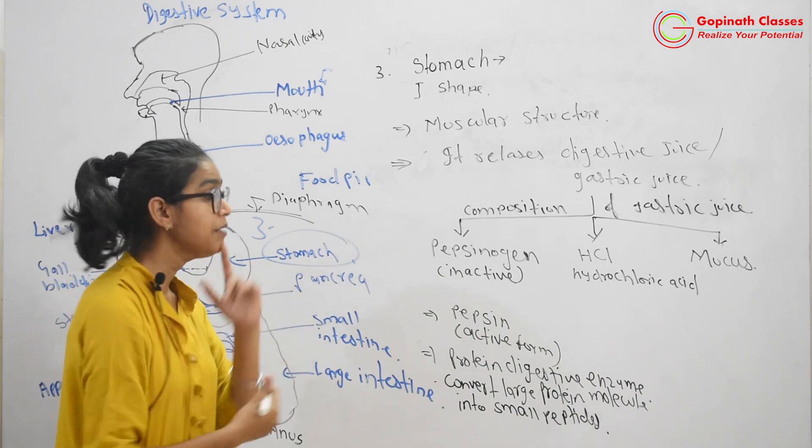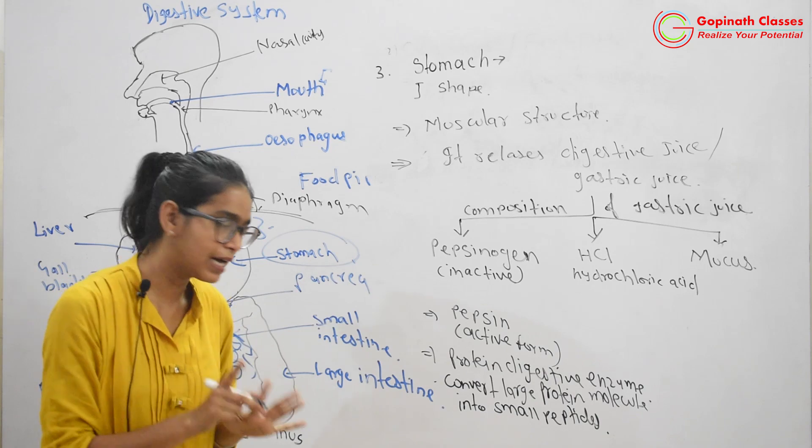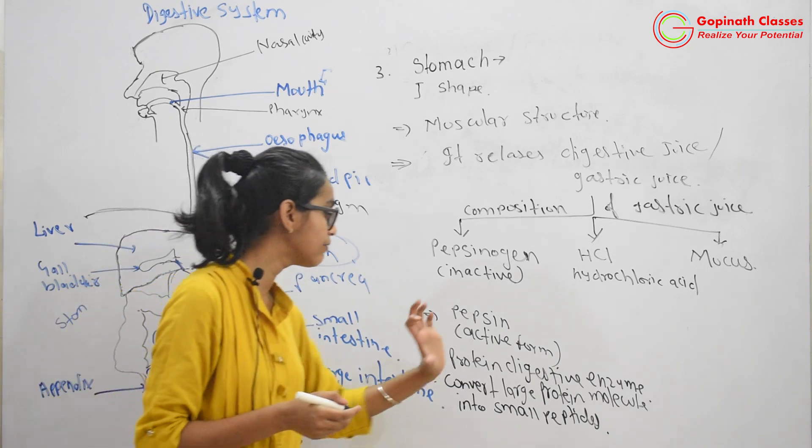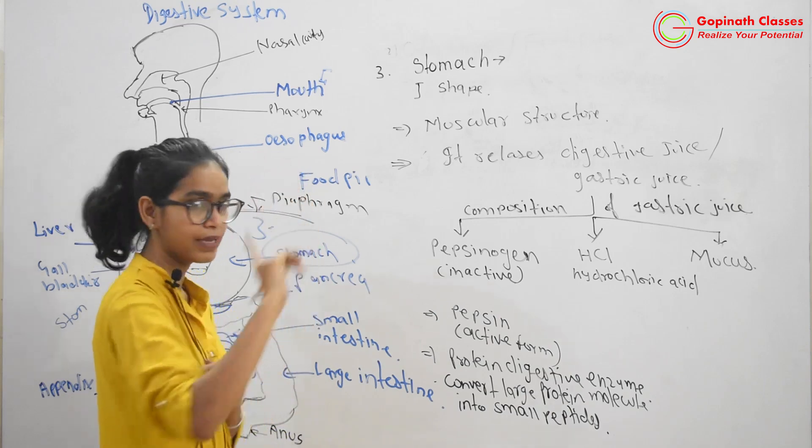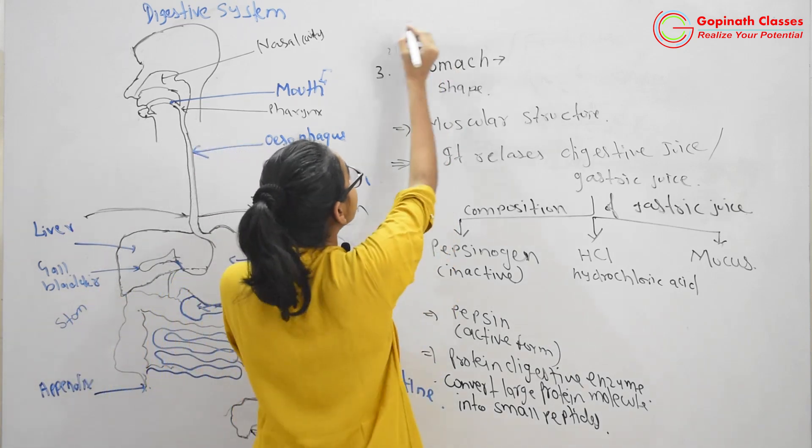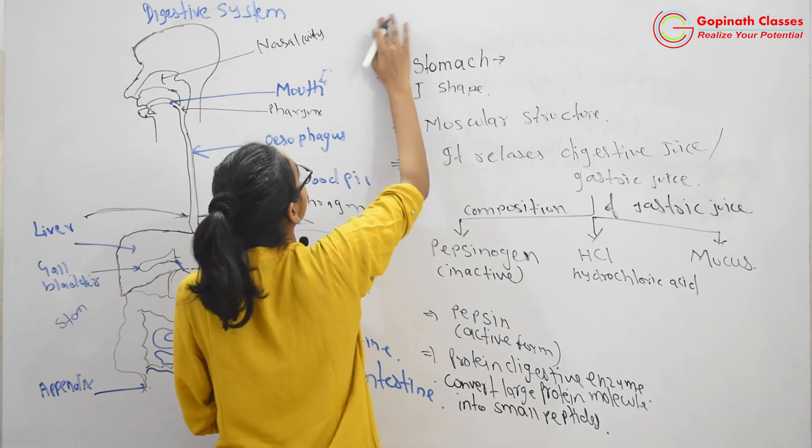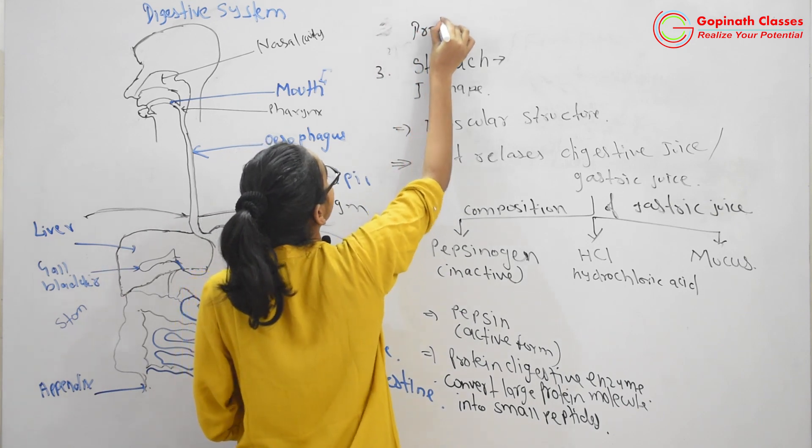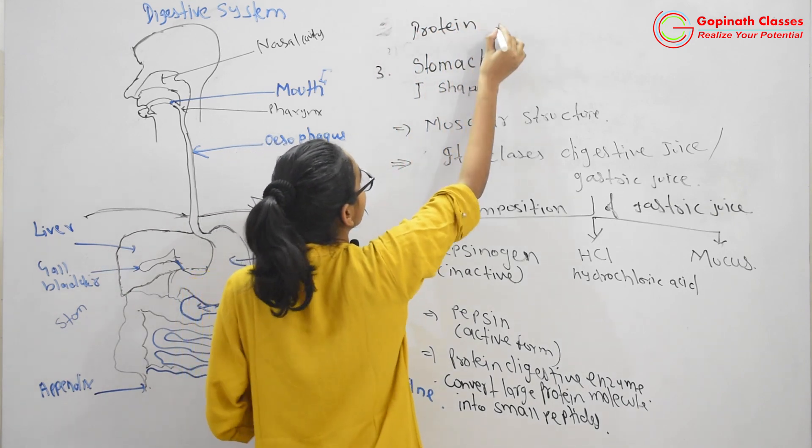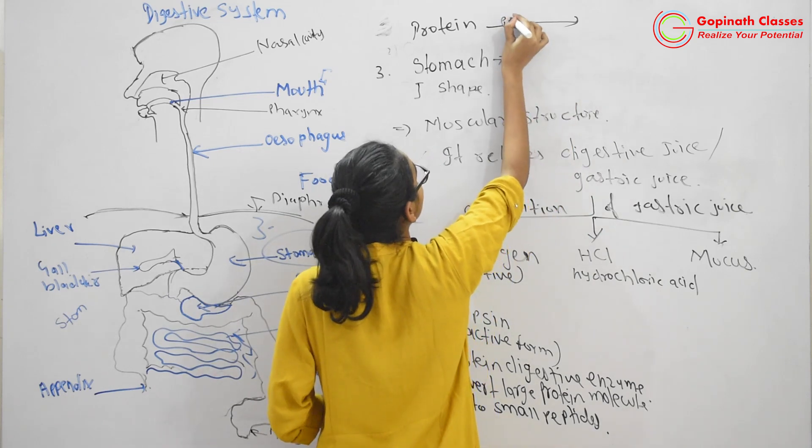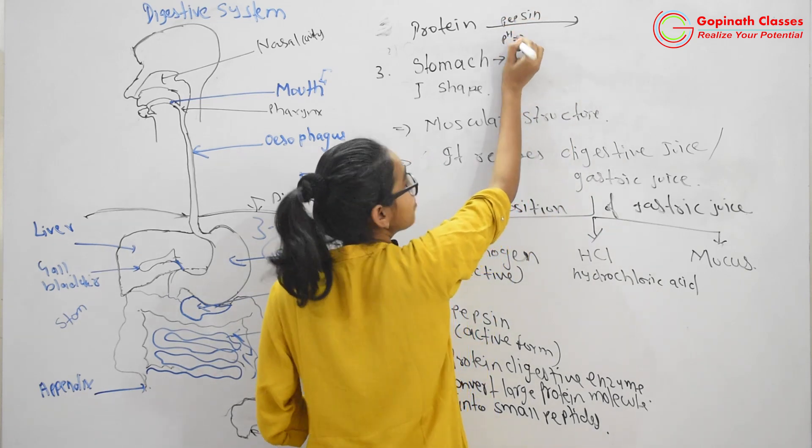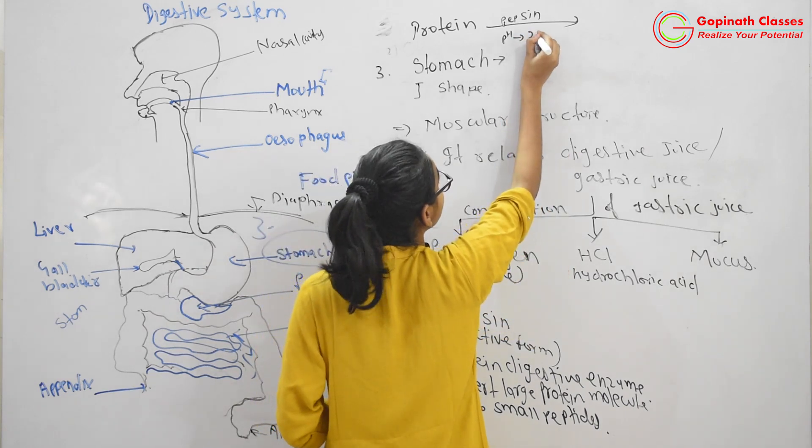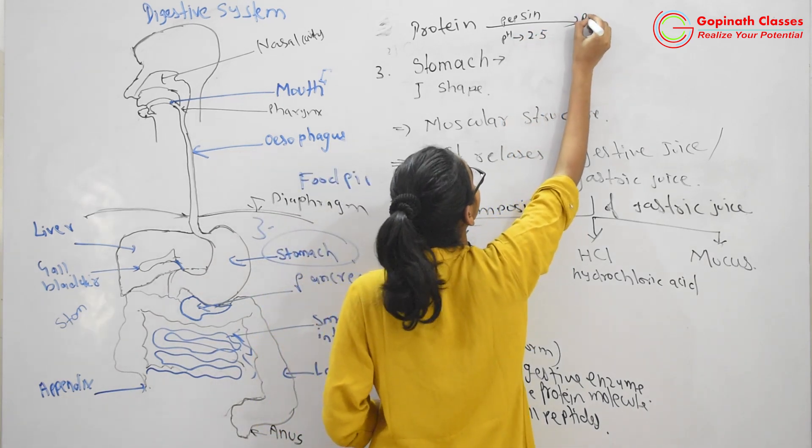Enzyme increases the speed of any chemical reaction. Here, which reaction? Conversion of protein into peptides. You can write it as a chemical reaction like this: Protein, with pepsin at pH 2.5, converts into peptides.